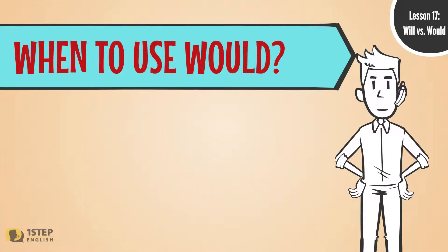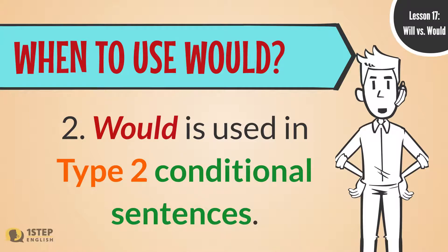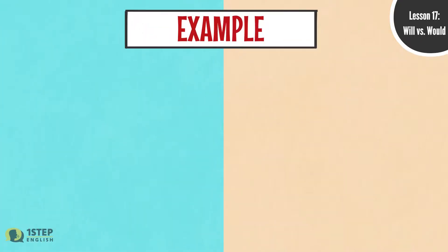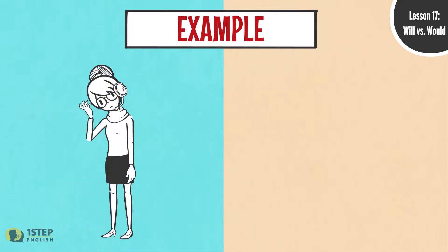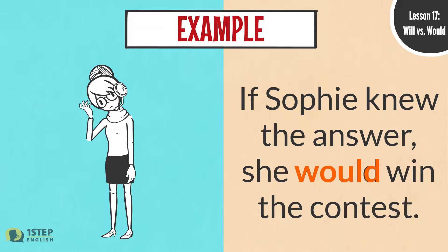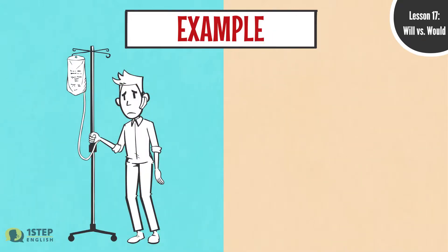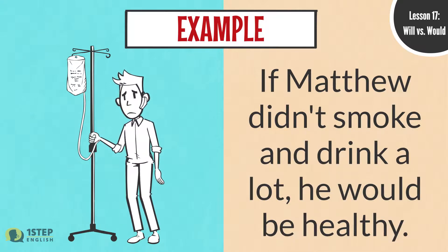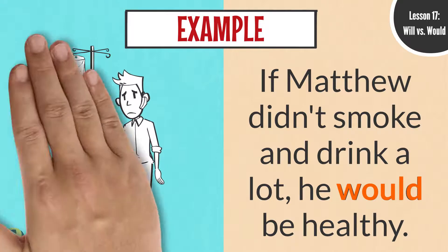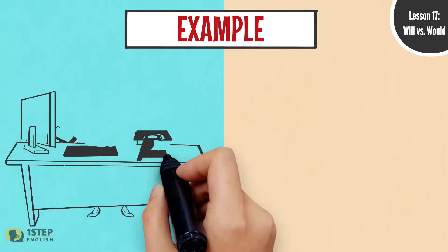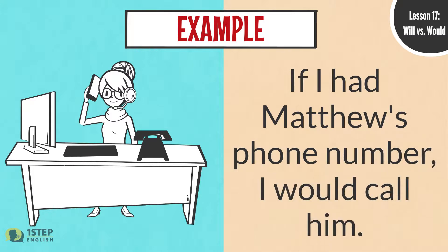When to use Would. Two: Would is used in type 2 conditional sentences. For example: If Sophie knew the answer, she would win the contest. If Matthew didn't smoke and drink a lot, he would be healthy. If I had Matthew's phone number, I would call him.